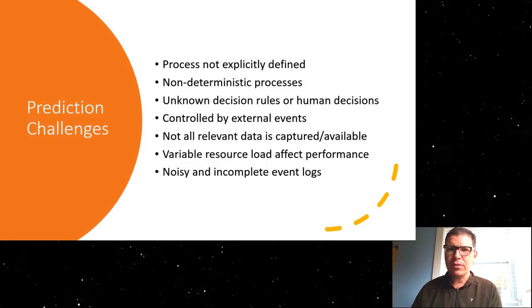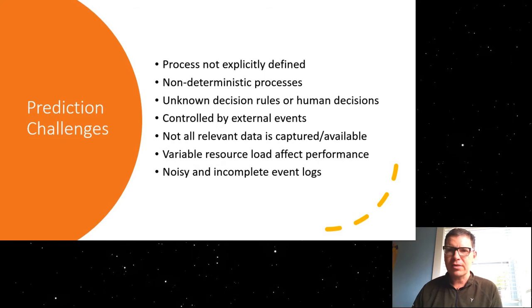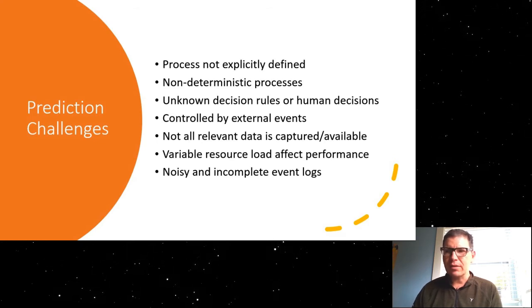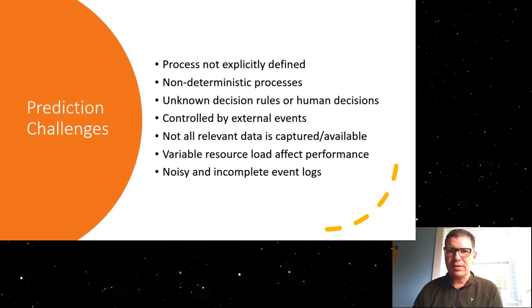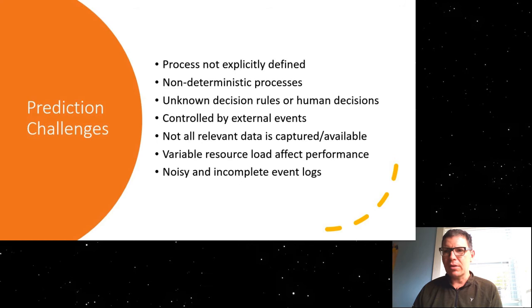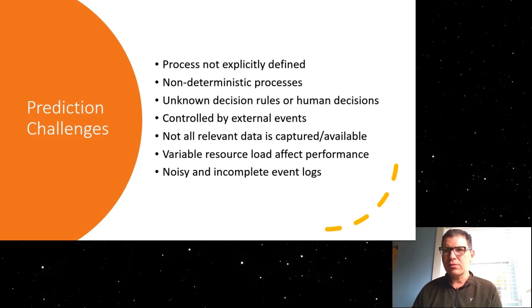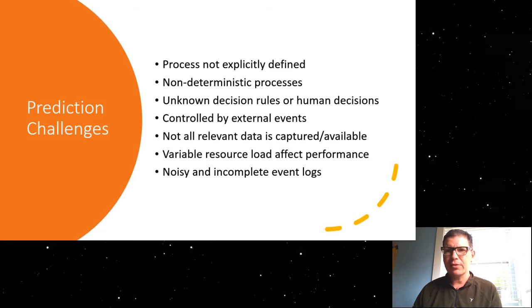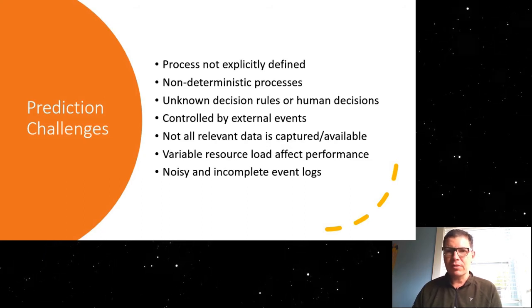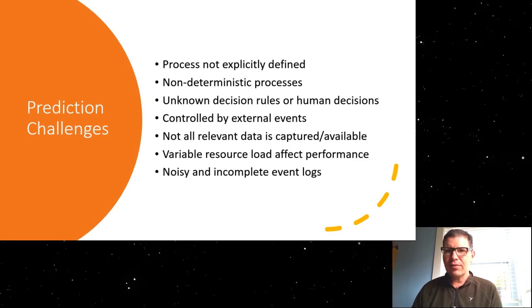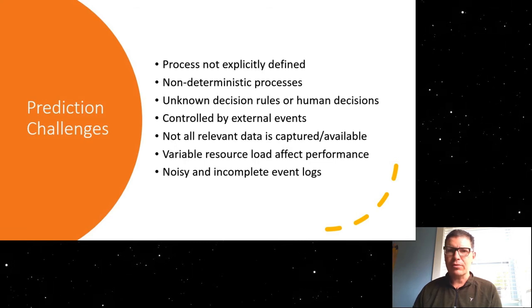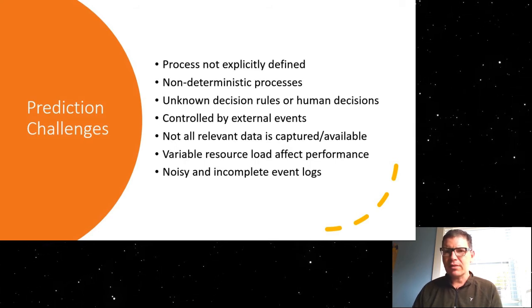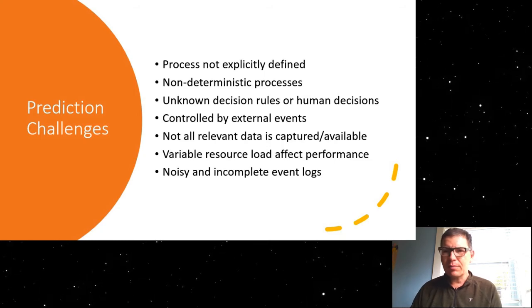Now, you might think, well, it's fairly straightforward to predict this because don't organizations have a well-defined process? Well, not necessarily. So oftentimes these processes are made up as they go, and in particular, it is performance information that is not necessarily easy to capture. The process may be non-deterministic. For example, think about resource allocation. Who does which activity? Maybe there's a random element to this. Oftentimes there are decisions being made in the process that are being made by humans. Decision rules might not be explicit. There might be external events that affect the process. Maybe I don't capture all the relevant data, or it's not available in my event log. And finally, I have a variable resource load that can affect the performance. So these are all factors that make the process hard to predict.